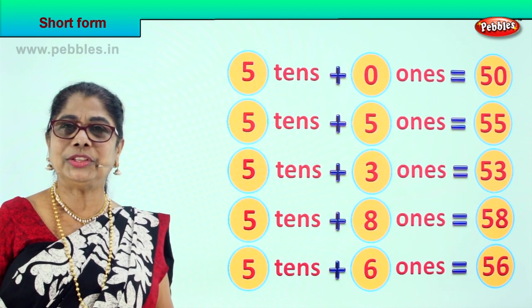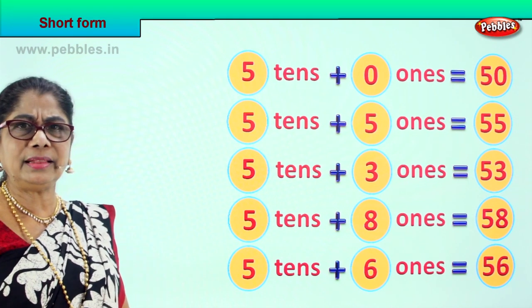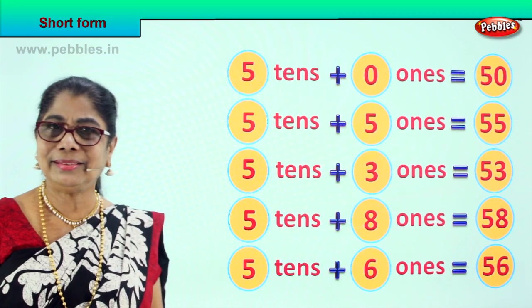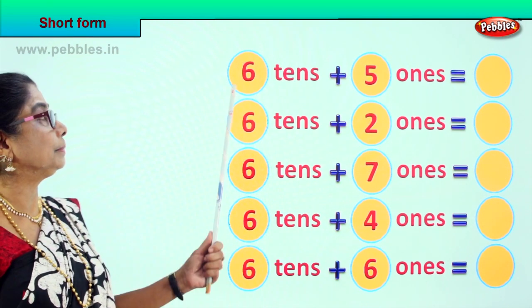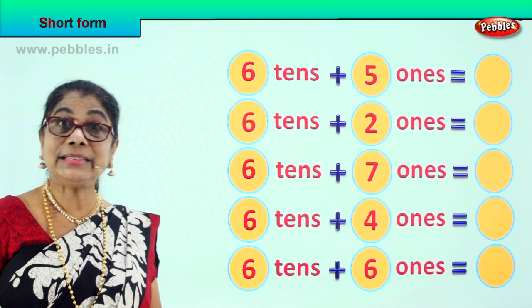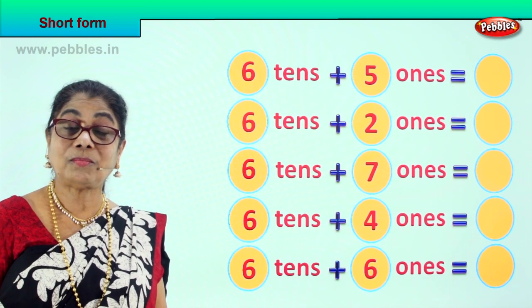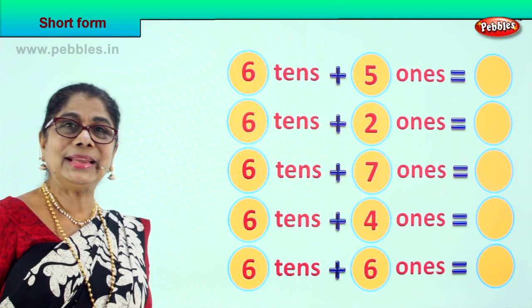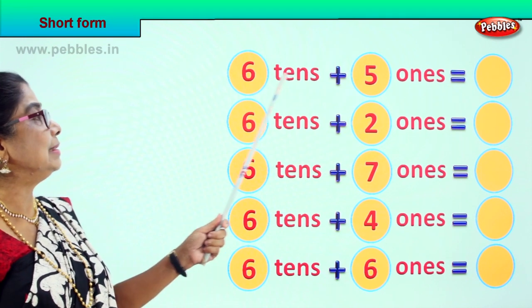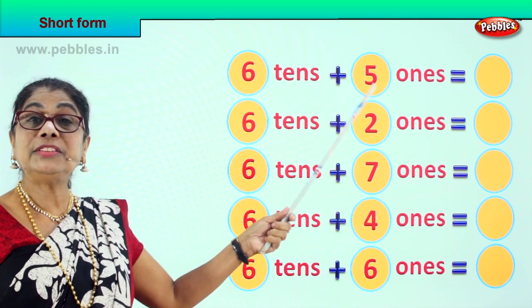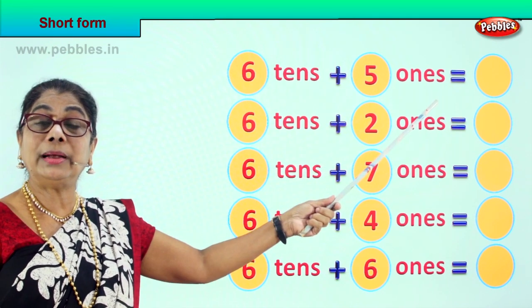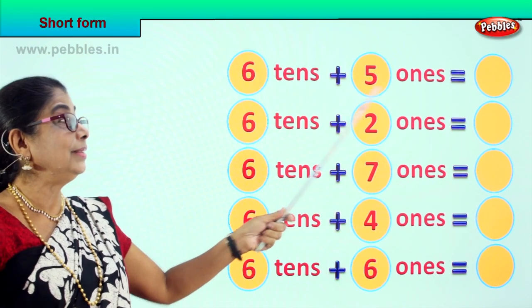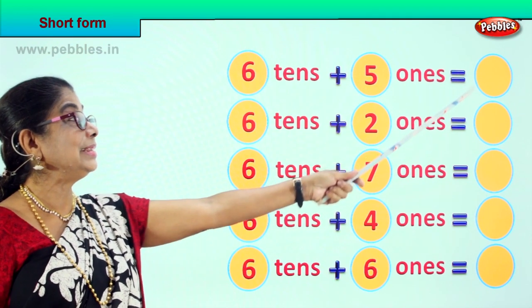Did you enjoy the short form? Let's take another exercise. Look what we have here. Now we have 6 tenths. What is 6 tenths? Good, 60. 6 tenths plus 5 ones is equal to? 60 plus 5? Good. 65.